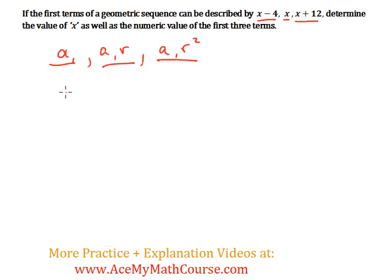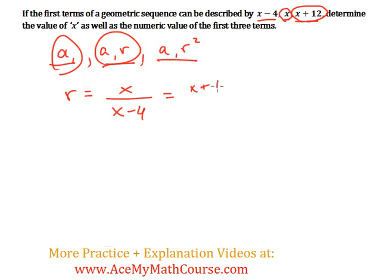So r is either going to be the second term divided by the previous, so we can have x divided by x minus 4, or it's also going to be equal to the third term divided by the second term. So x plus 12 divided by x.